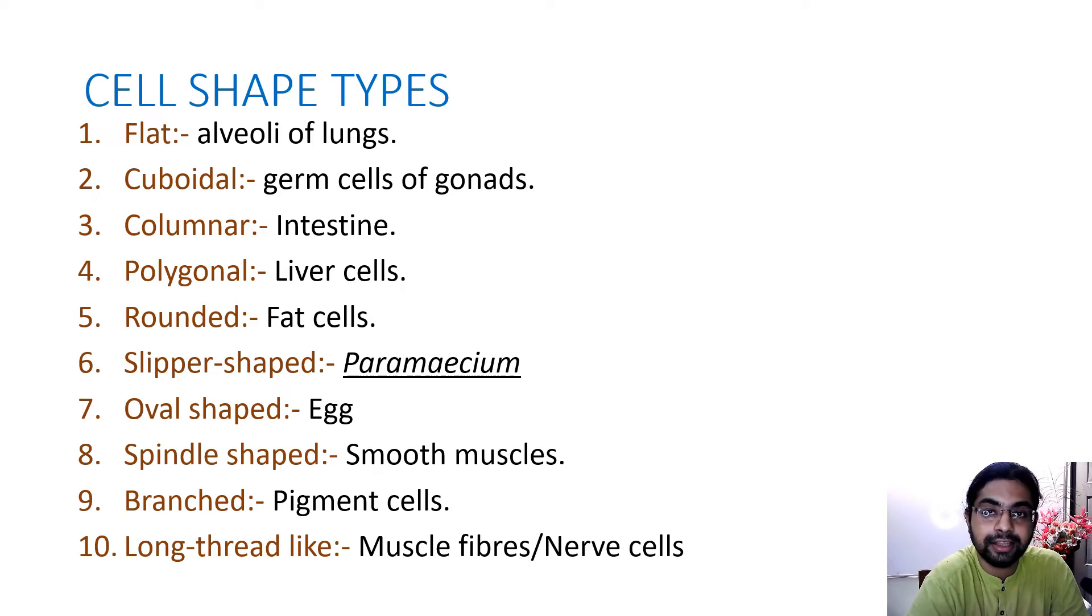Flat cells we find in the alveoli of the lungs. Alveoli - we will discuss this in our topic respiratory system. A brief introduction is alveoli are the air sacs. It helps in the exchange of gases, carbon dioxide and oxygen. It is present in our lungs, it is the endpoint of bronchioles. There in the alveoli of lungs we find flat cells.